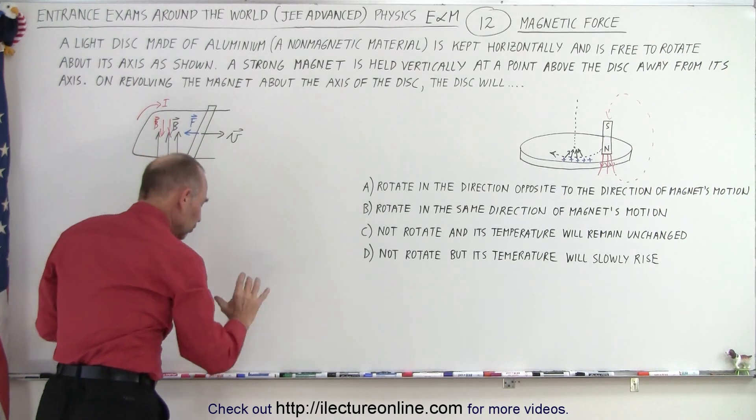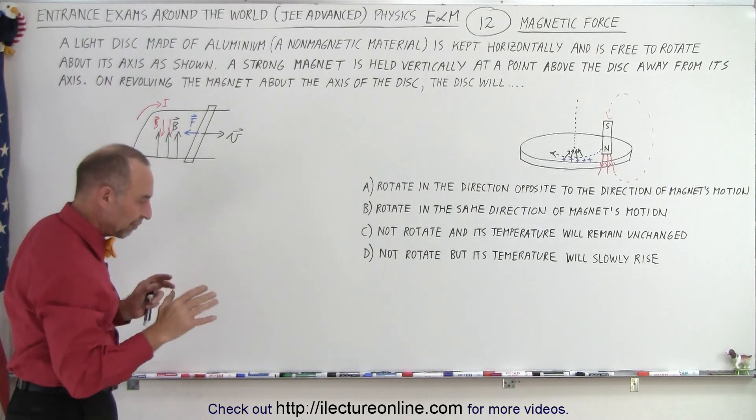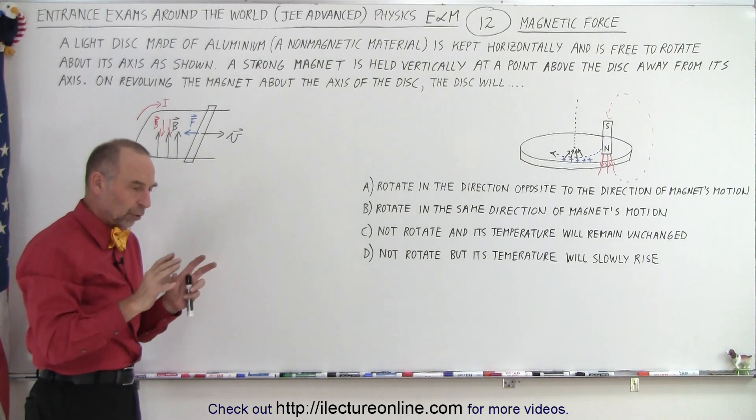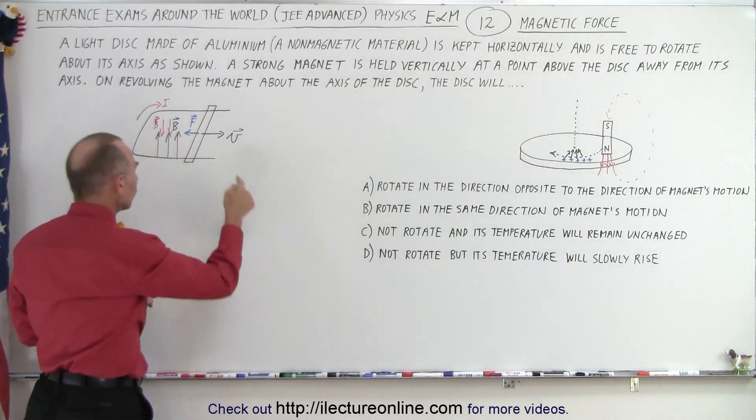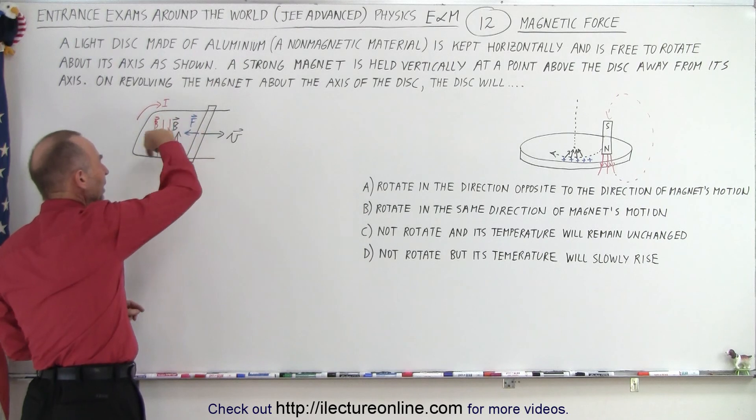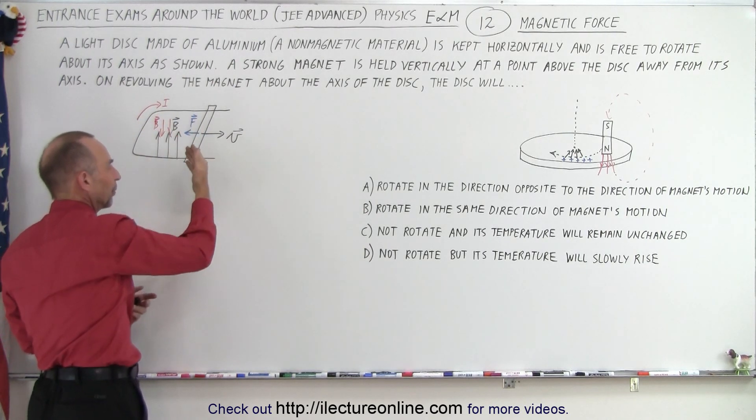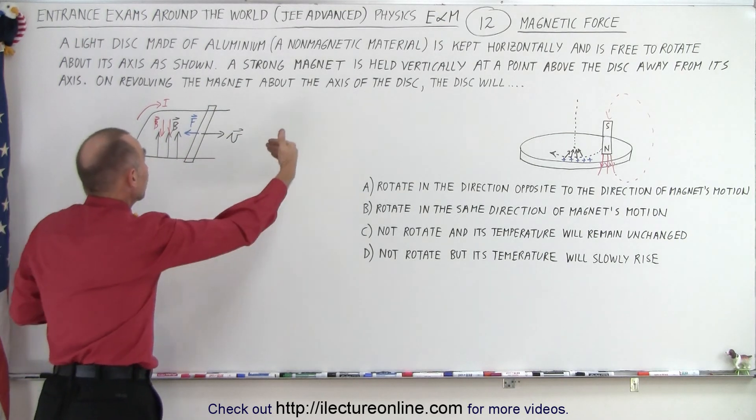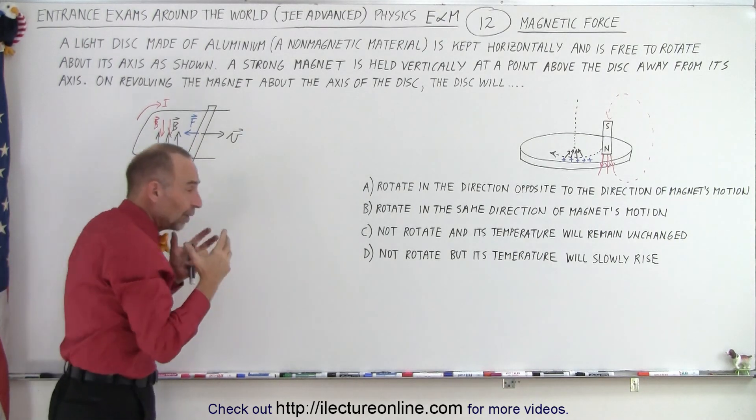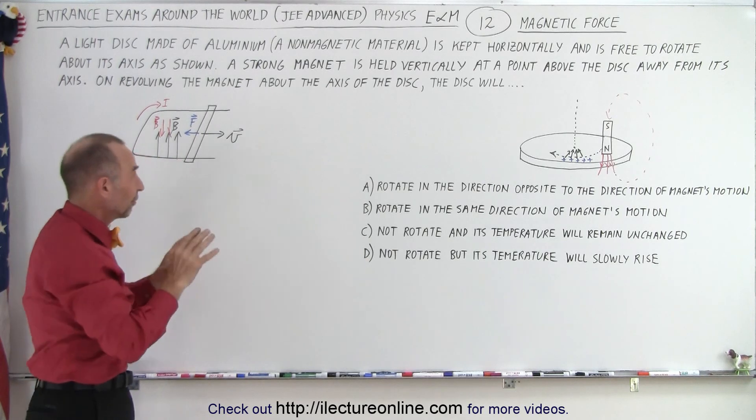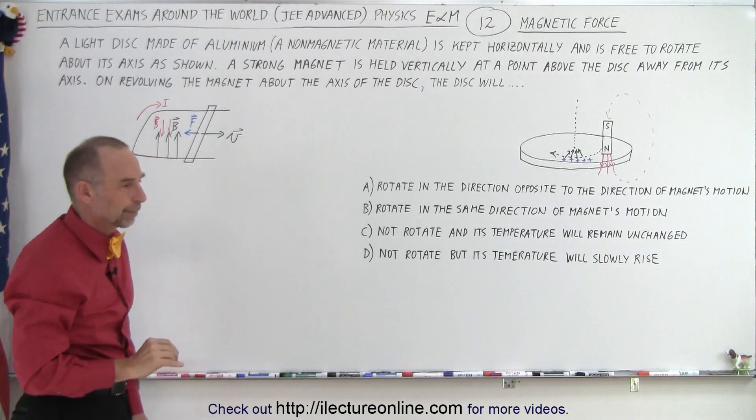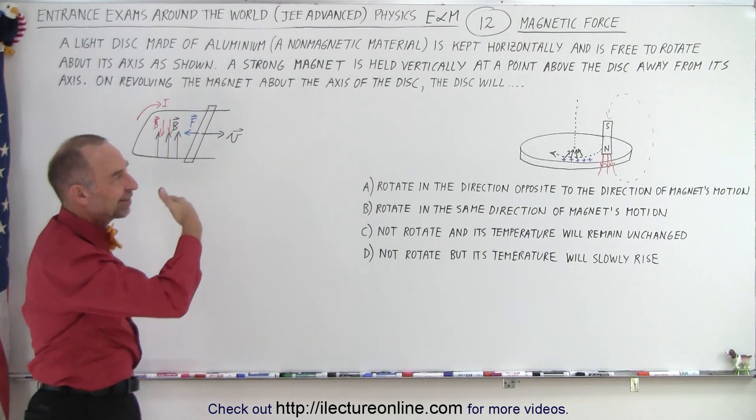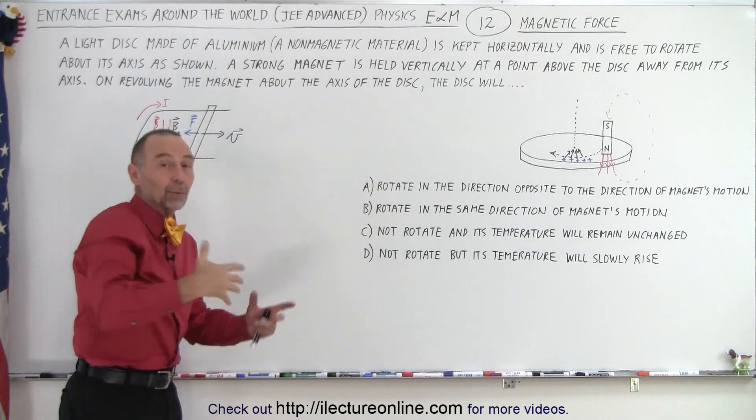So what we've known all along with this type of example is that whenever we use a force to push against the bar to cause a change in the magnetic flux through a loop, that sets up a current that sets up a magnetic field that opposes the change, which causes a force pushing in the opposite direction. So there's always a force in the opposite direction from the force that makes things happen. And I believe that the same principle must apply here one way or the other.